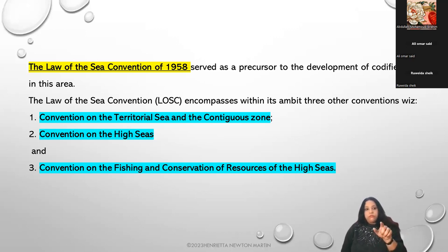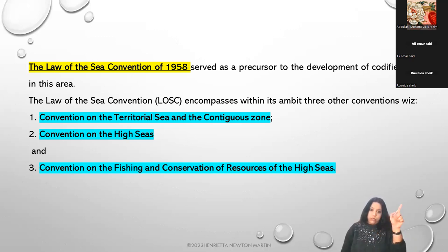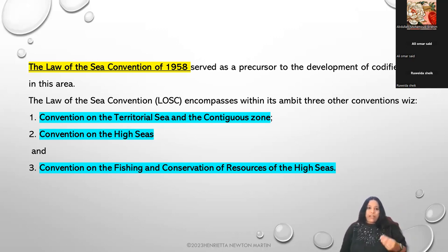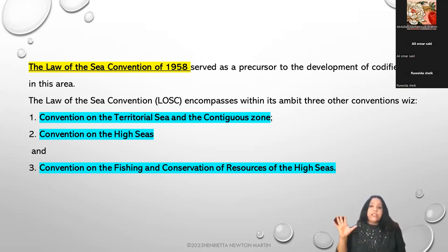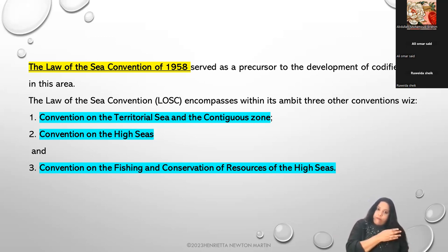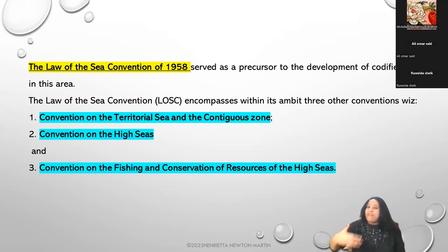This has been a primary convention - an interim convention - the 1958 law of the sea convention, also called internationally an interim convention. It was a kind of foundational convention in 1958 which served as a precursor, triggering the development of codified law in this area. I would also say that Hugo Grotius's treatise Mare Liberum in 1609 actually triggered off the development of the law of the sea.